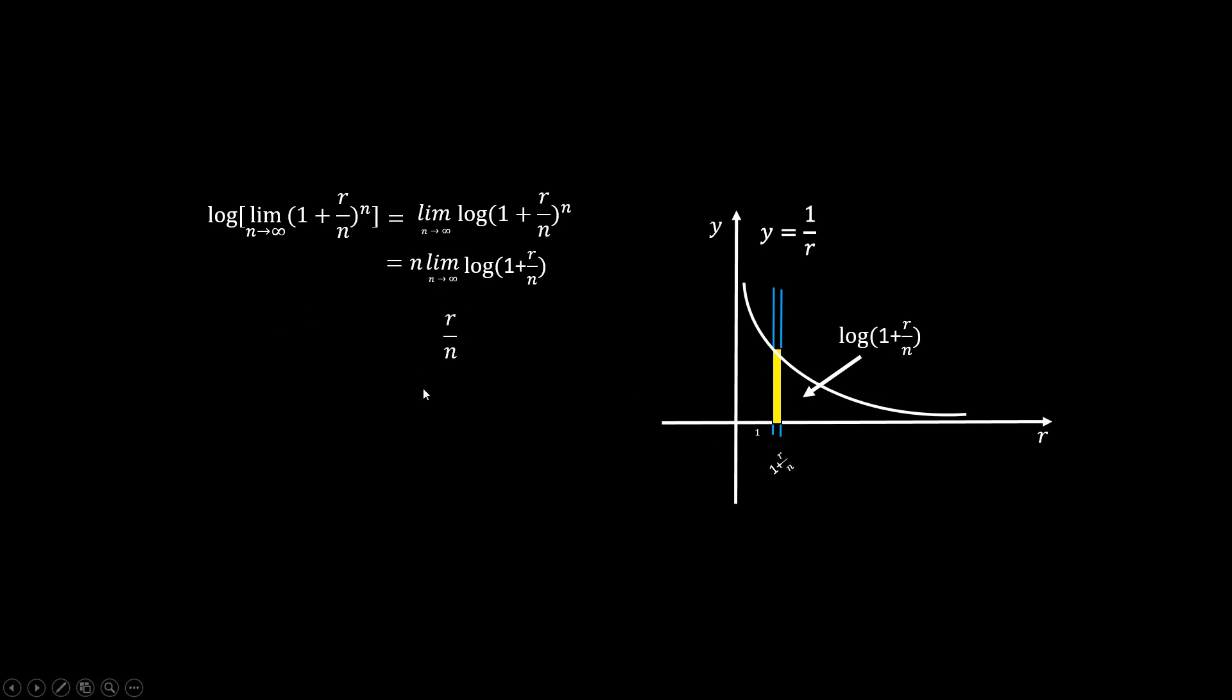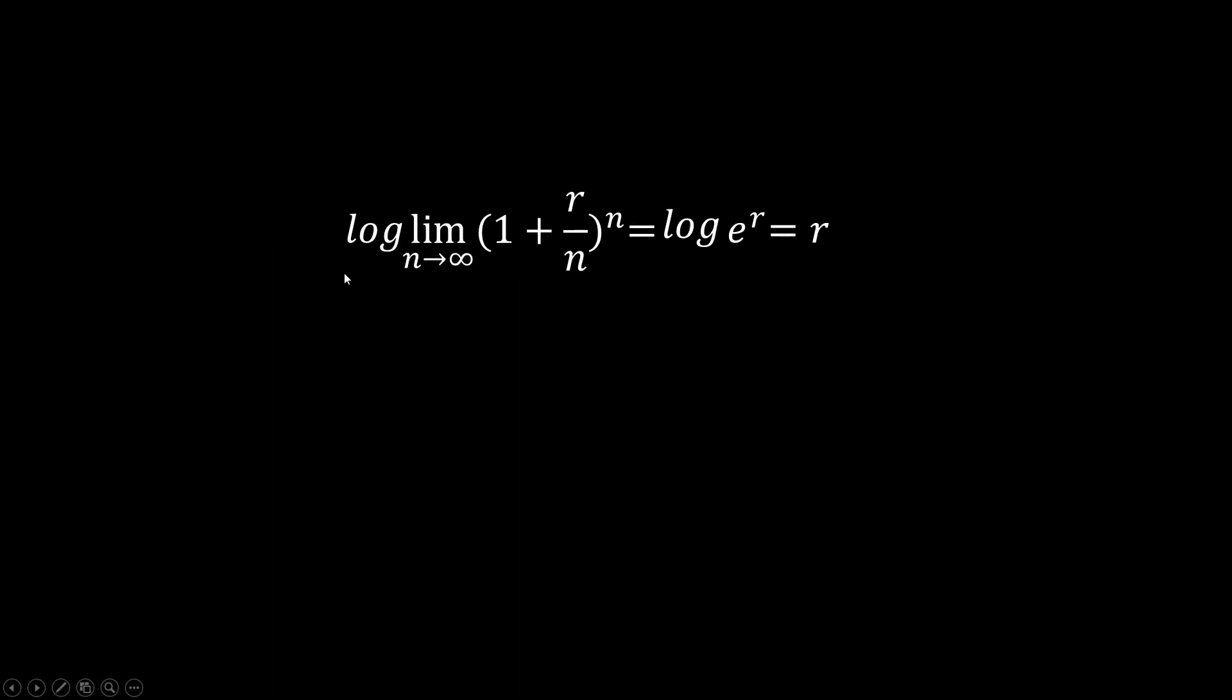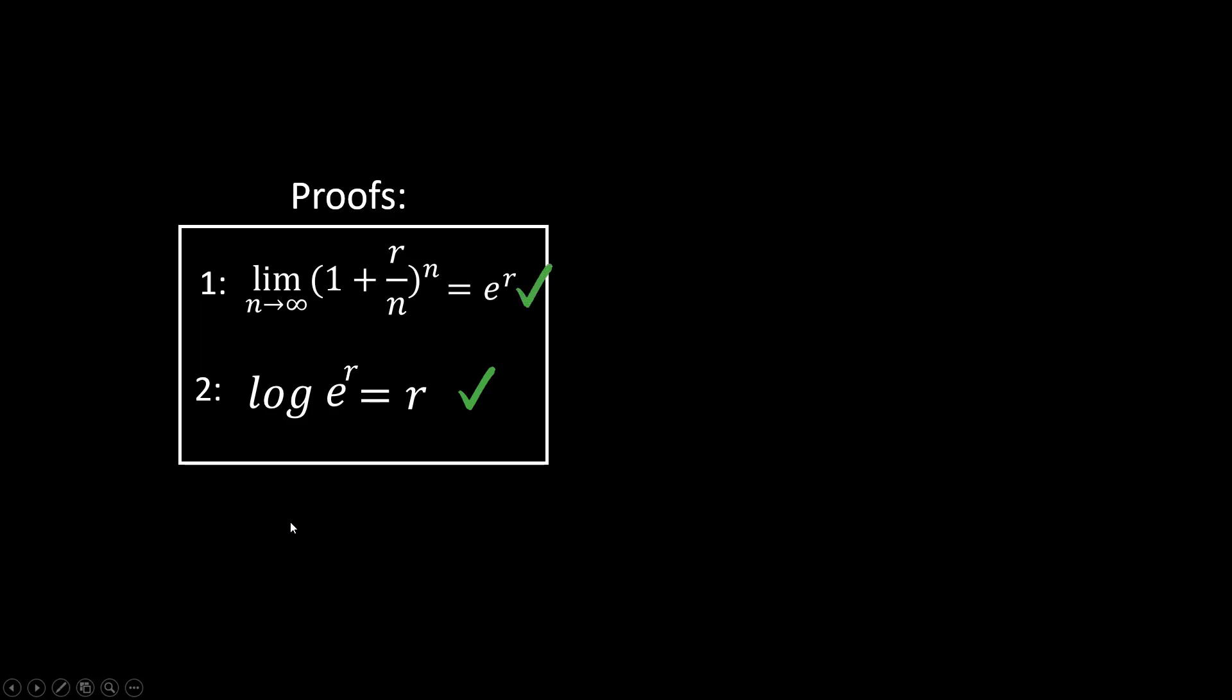So the limiting area equals to R over N. So these terms approach N times R over N, which is R. Since the two logs are the same, we conclude that these two are equal. So that means natural growth at any rate R can be expressed as E to the power of R. Now the first one is also proved. Let me remind you of their meanings. First one means E is the language to express any natural growth. Second one is saying log is the right operation to get that natural growth rate.